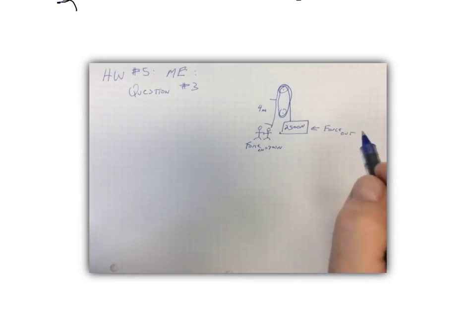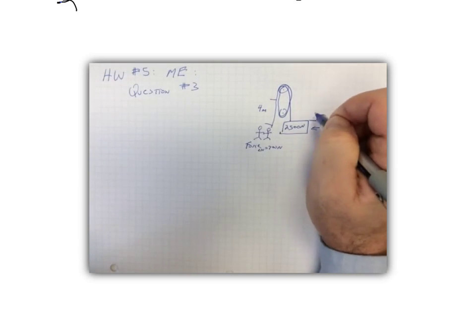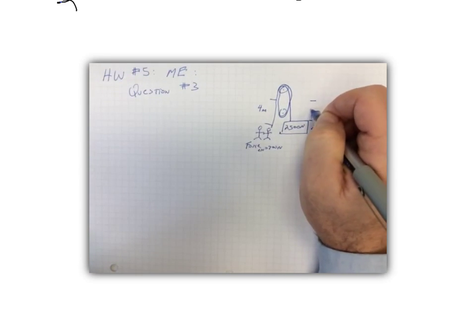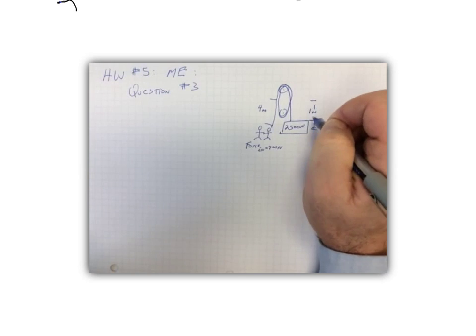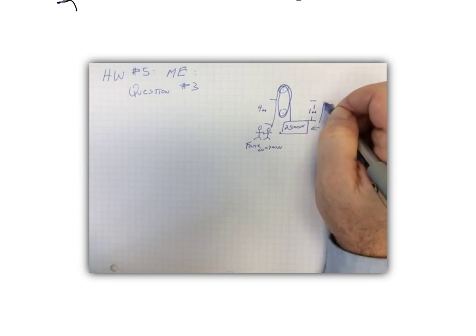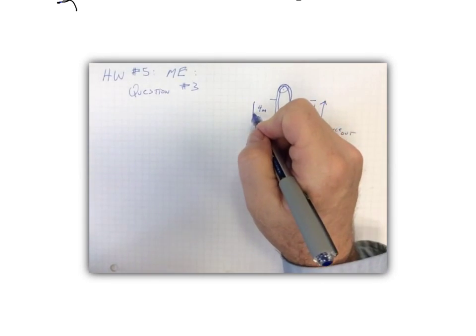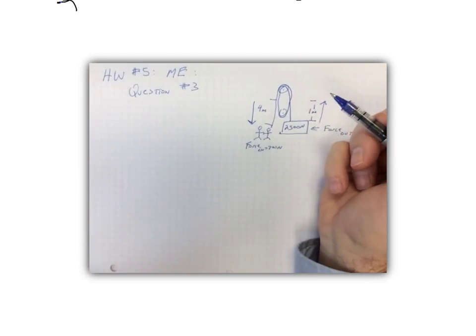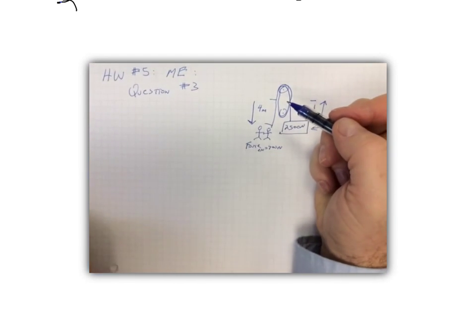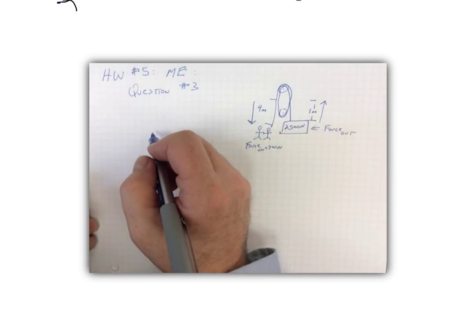And then it says they're gonna raise the motor one meter. So the motor is gonna go from here to here, obviously not in scale, but there's our distance of one meter. So the motor's gonna go up one meter, the rope's gonna come down four meters.